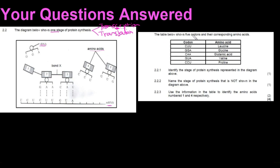The table below shows five codons and their corresponding amino acids. The codon is mRNA, so we'll be using that strand to link it to the amino acid and not tRNA. Remember, tRNA brings in the amino acid. In this case they want to know what the mRNA is — they can give you the codon and expect you to work back to it.